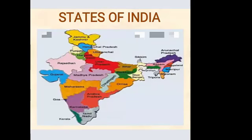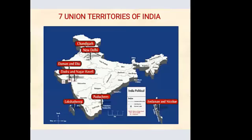We studied that there are a total of 29 states in India. We also studied the seven union territories of India: Chandigarh, New Delhi, Daman and Diu, Dadra and Nagar Haveli, Lakshadweep, Puducherry, and Andaman and Nicobar.